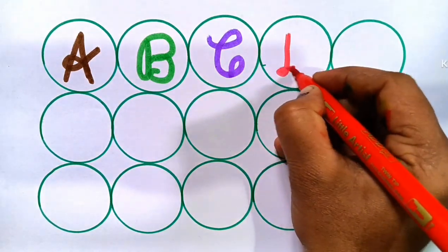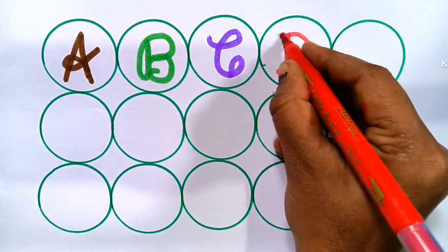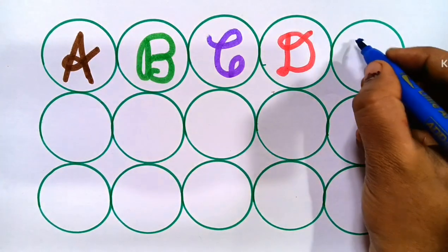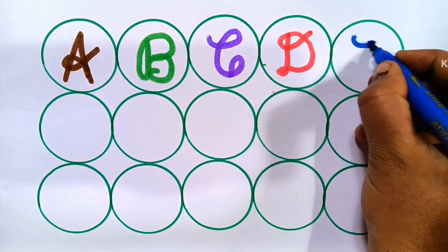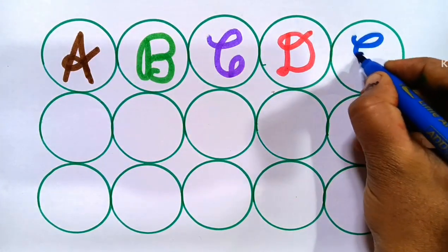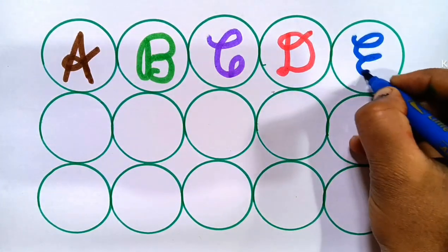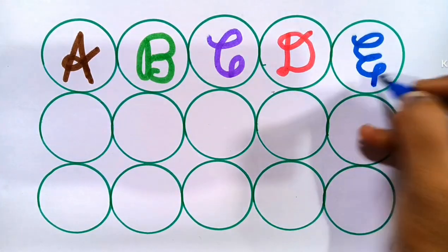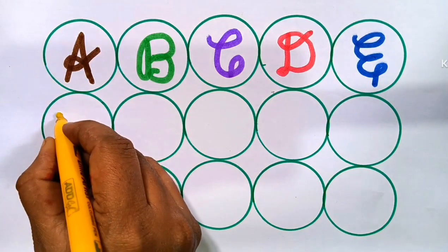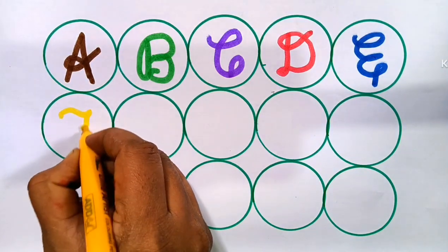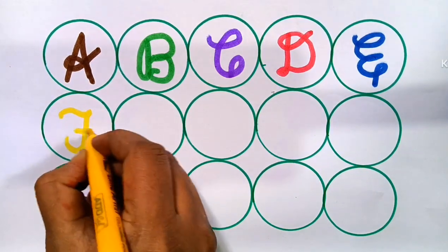D. D for Dog. E. E for Elephant. F. F for Fingers.